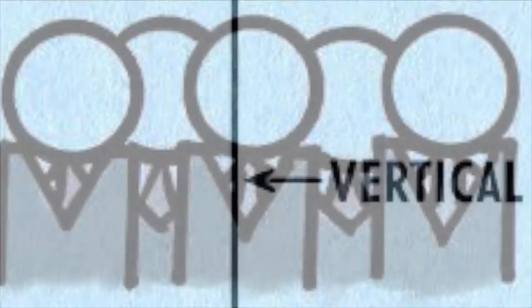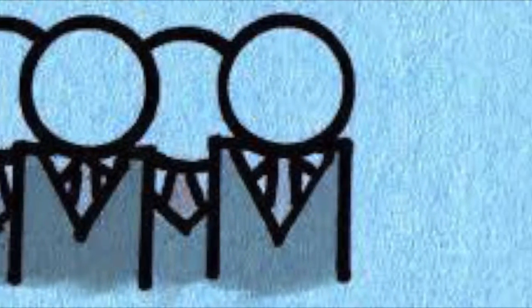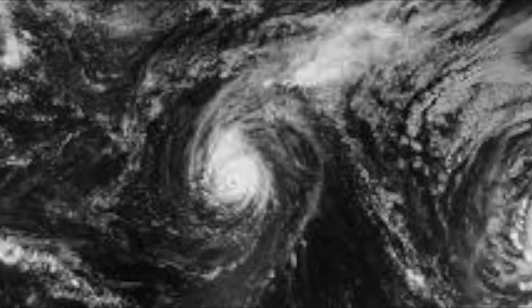Galileo claimed that projectile motion was consist of both horizontal and vertical components. He proposed that these components were independent of each other, occurred simultaneously, and perpendicular to each other.